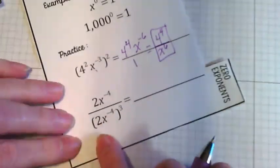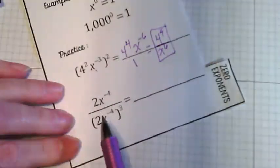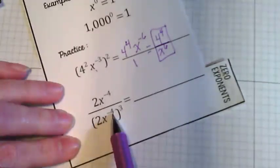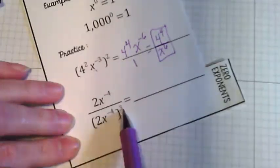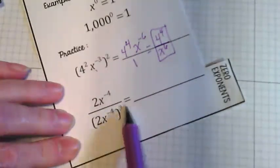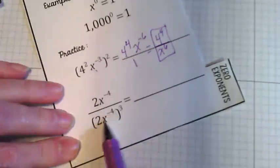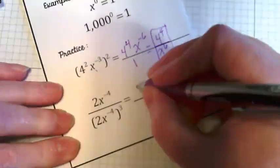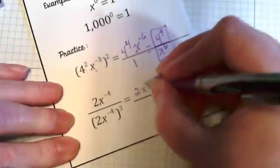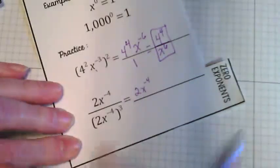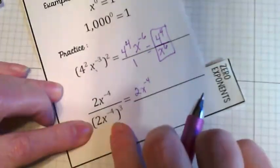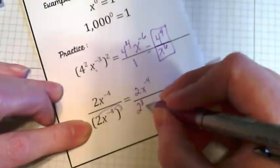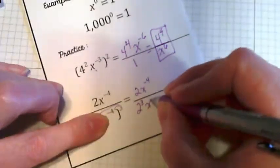This one also can look a little bit messy but let's just talk it through. We have 2x to the negative four and we have 2x to the negative four here to the third power. So let's first take care of this. We also have to work with order of operations and we have an exponent to deal with here. This doesn't have anything, no parentheses. It's going to stay as is for now. So let's rewrite this as 2x to the negative four. And the denominator is going to become 2 to the third because we're distributing, and x to the negative 12.